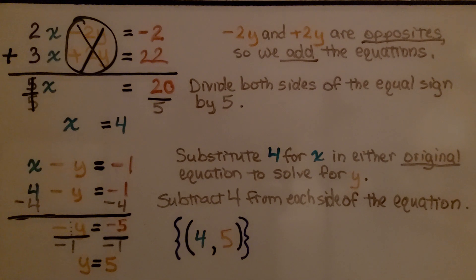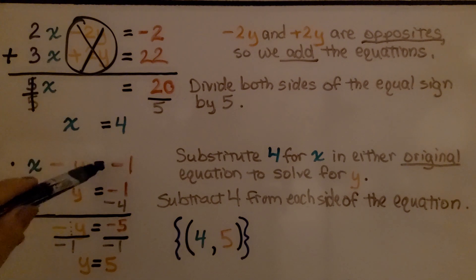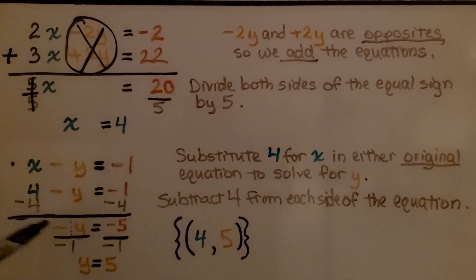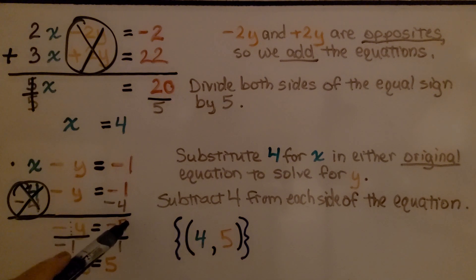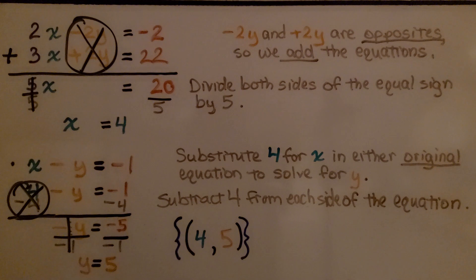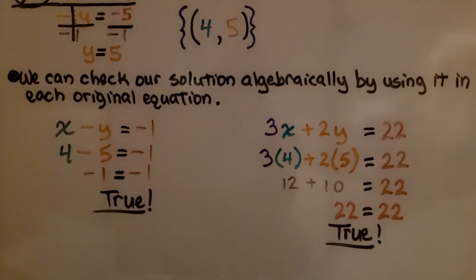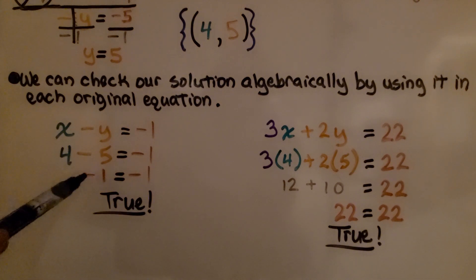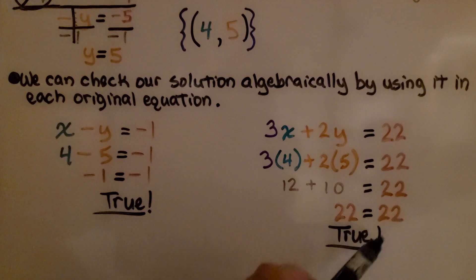Now we substitute 4 for x in either original equation. Using the original first equation before we multiplied it by 2: negative x minus y is equal to negative 1. We substitute 4 for x and get negative 4 minus y is equal to negative 1. We subtract 4 from each side, and we get negative y is equal to negative 5. There's an invisible negative 1 coefficient on y, so we divide both sides by negative 1, giving us y equals positive 5. Our solution is x equals 4, y equals 5. We can check algebraically and find negative 1 equals negative 1, and 22 equals 22 — both true.